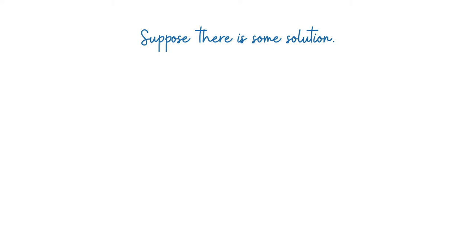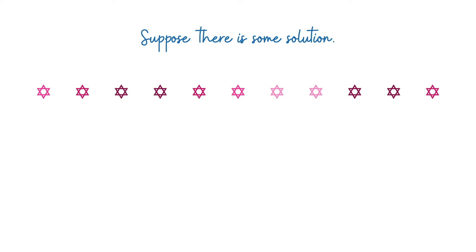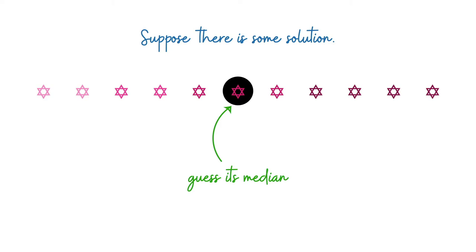Let's begin by fixing an abstract optimal solution — we know at least one exists. Reorganize its elements in sorted order and fix attention on the median element. We don't know what the median is, but notice it must be one of the numbers in the input array. So we can just try all of them — run a for loop over all elements and ask: if the optimal solution had this particular element as its median, what would the solution look like?